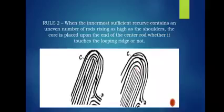Rule 2: when the innermost sufficient recurve contains an odd number of rods rising as high as the shoulders, the core is placed upon the end of the center rod, whether it touches the looping ridge or not. In the first example with 3 rods, the core is placed at the end of the center rod. In the second example with 5 rods, we also choose the core at the end of the center rod. This rule applies to odd numbers of rods.